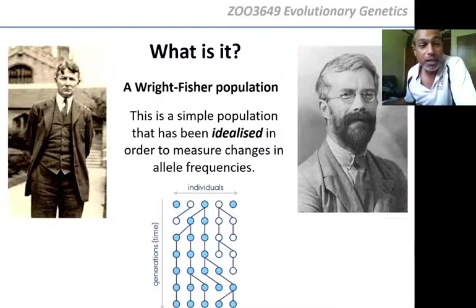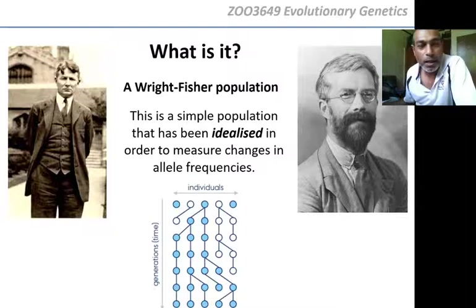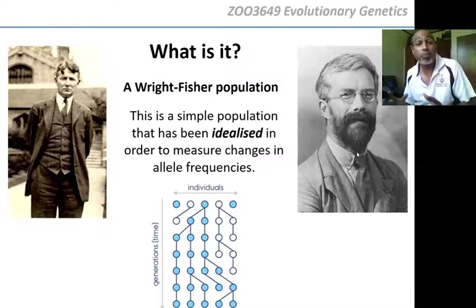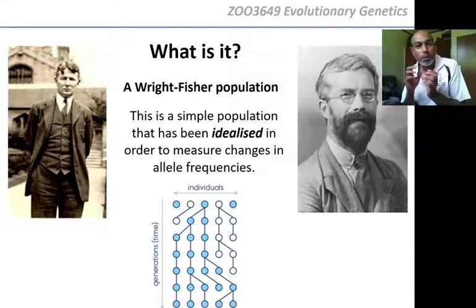The Wright-Fisher population is named after Sewell Wright — the father of genetic drift — and Ronald Fisher — the father of mathematics and evolution. Both these guys thought of this idea at the same time, which is why it's named after both of them. These were among the first to put mathematics to biology, and that's why they developed these models.